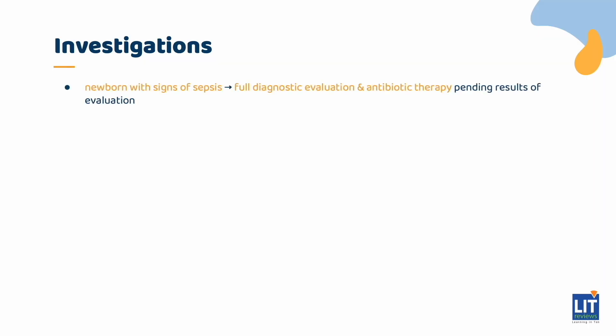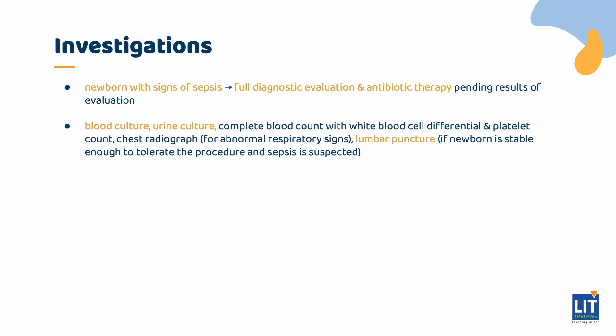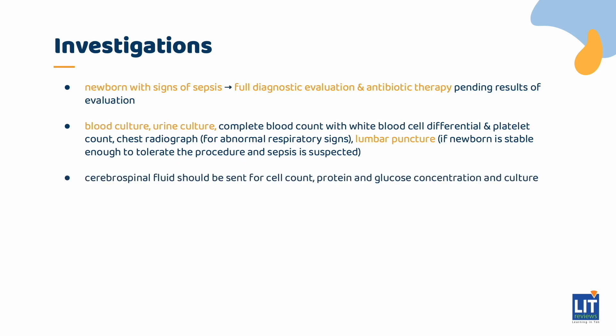Any newborn with signs of sepsis should receive a full diagnostic evaluation and antibiotic therapy pending the results. The evaluation should include a blood culture, a urine culture, a CBC including white blood cell differential and platelet count, a chest radiograph if any abnormal respiratory signs are present, and a lumbar puncture if the newborn is stable enough to tolerate the procedure and sepsis is suspected. The cerebrospinal fluid should be sent for cell count, protein and glucose concentration, and culture.